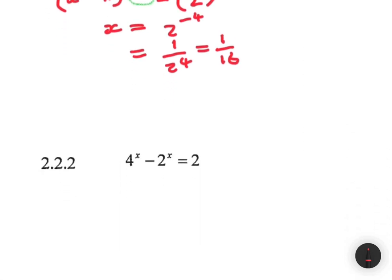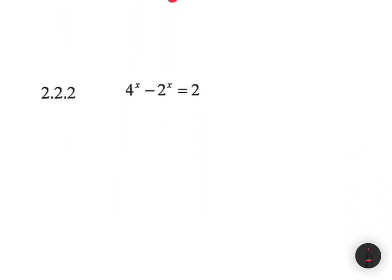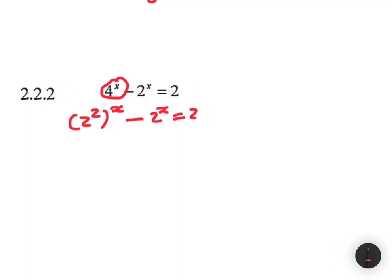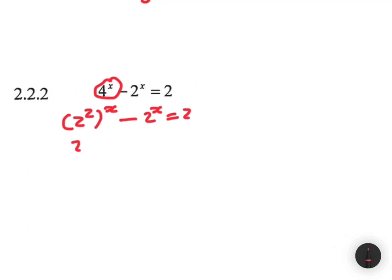The next question: 4 to the power x minus 2 to the power x equals 2. Instead of having 4 to the power x, let's give it a base of 2. So we can write 2 to the power 2, everything to the power x, minus 2 to the power x equals 2. That gives us 2 to the power 2x minus 2 to the power x equals 2.